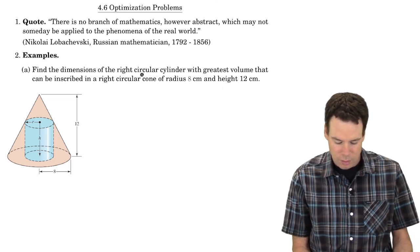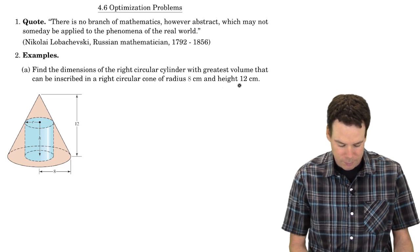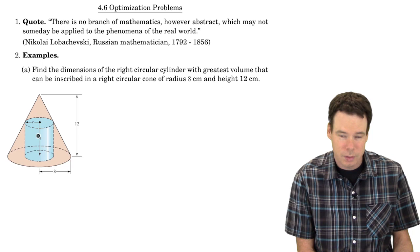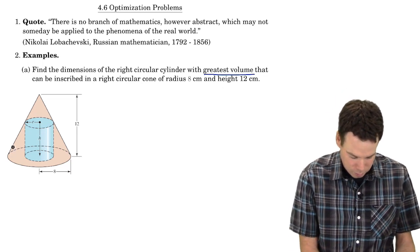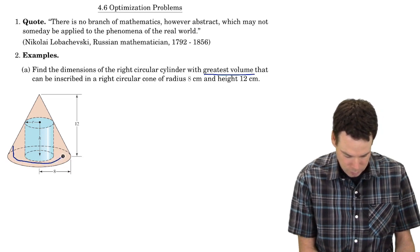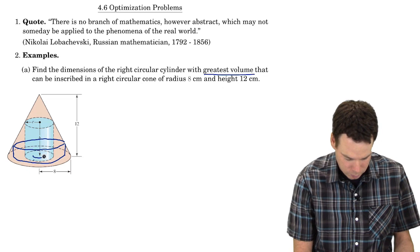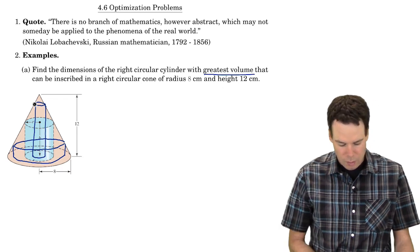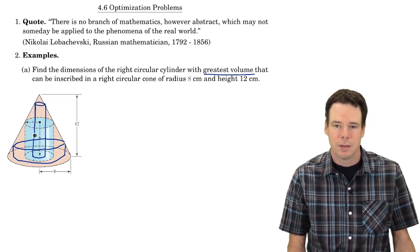We want to find the dimensions of the right circular cylinder with the greatest volume that can be inscribed in a right circular cone of radius 8 and height 12. Here's our picture: we've got the cone in red and then we've got our right circular cylinder drawn inside in blue. Our goal is to find the cylinder of greatest volume. There can be really short cylinders that are wide with a large base radius, or really tall narrow ones that sit inside the cone. Our goal is to find the cylinder that has the greatest volume.